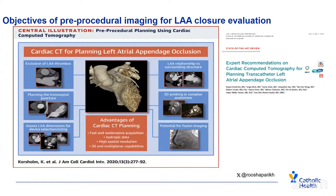Let's go over the objectives of pre-procedural imaging for left atrial appendage closure evaluation. We want to exclude left atrial appendage thrombus, assess the LAA relationship to surrounding structures, plan the transeptal puncture, assess dimensions for device selection and sizing, potentially assess it for 3D printing in complex anatomies, and there is a potential for fusion imaging.